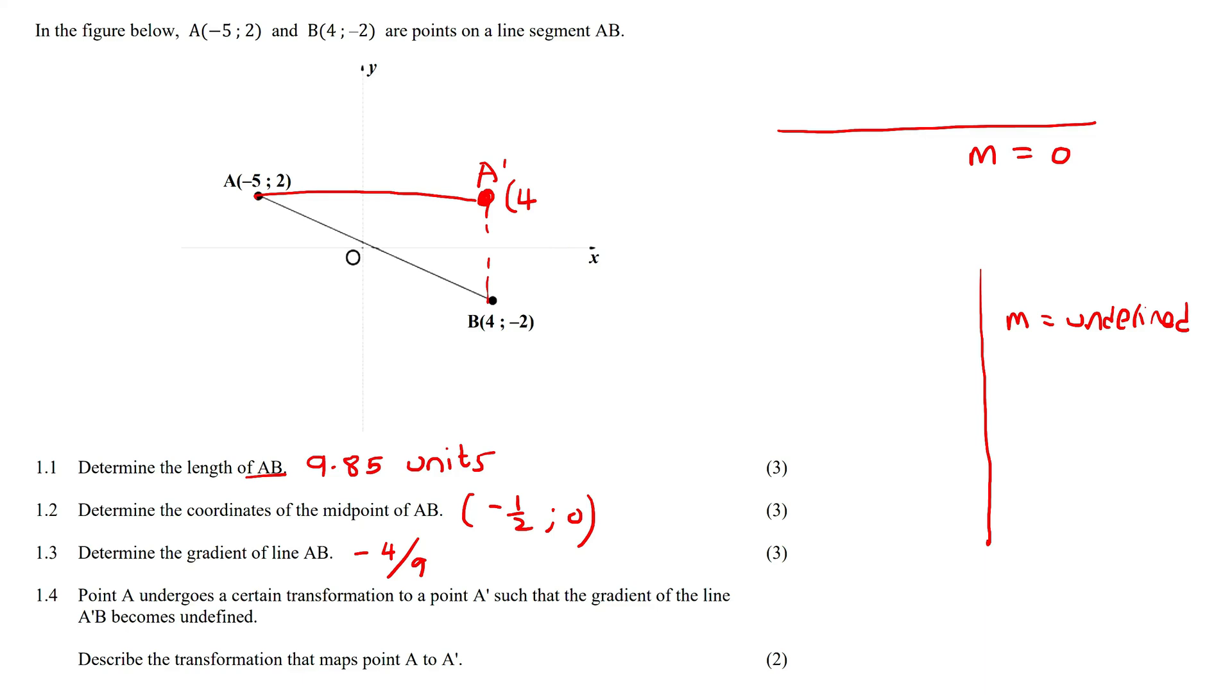It must have the same x value, and then the y value would have to be exactly the same as this one because it hasn't gone up and it hasn't gone down. It's only gone sideways so it must share the same y value. So this would be the new coordinates of A.